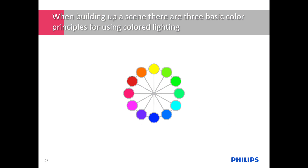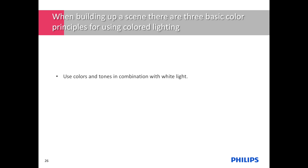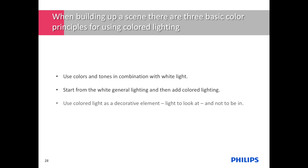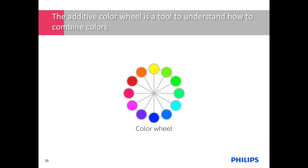Let's now talk color. It's easy to go crazy with colored lighting — the point is how to use it so that it makes us feel good. Here are basic color principles when building up a scene: use colors and tones in combination with white light. Start from the white general lighting and then add colored lighting. Use colored light as a decorative element — light to look at, not to be in. With so many light points in a room and the possibility to make any color, we can use the additive color wheel as a basic design tool to help us choose and understand how colors interact with each other.